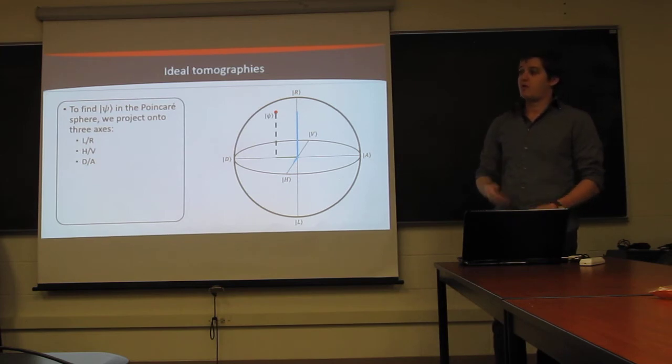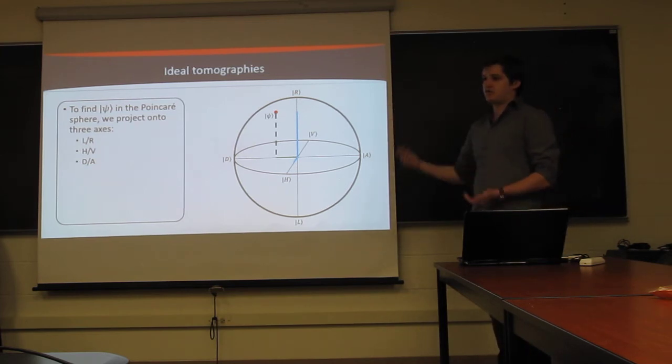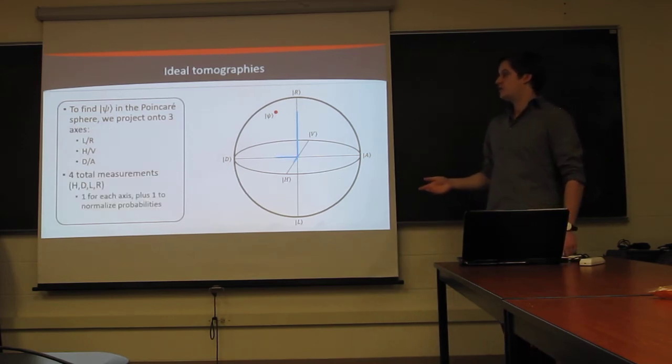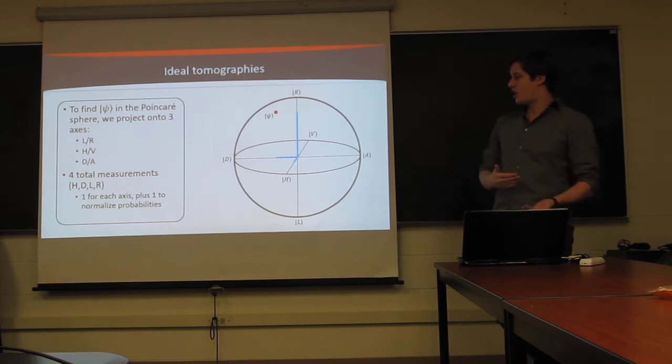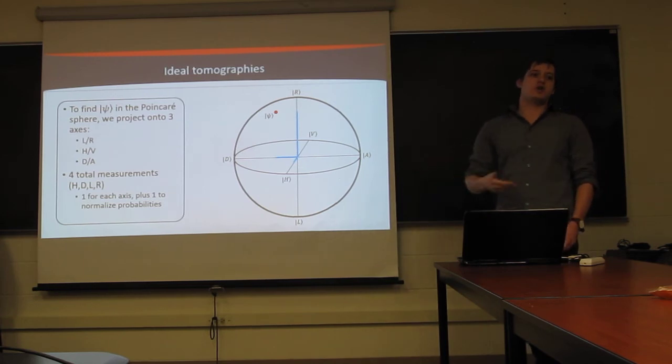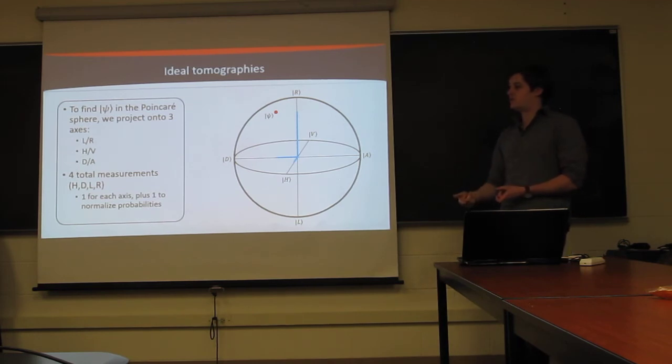Now, since we're dealing with probabilities here, along these axes, not actual photon counts, but you're measuring photon counts, this requires four total measurements. One for each of the actual axes you're measuring, and then one in an orthogonal state, so that you can normalize probabilities. So, for example, you'll measure H and D and L, one for each axis, but then you'll also want to measure R, because L plus R would be the total number of photons you're measuring, and you can use that to normalize all of your probabilities, and find the probability for V and A.